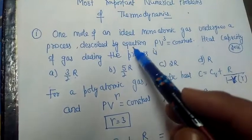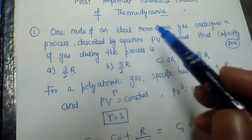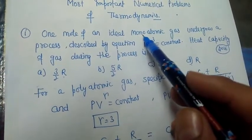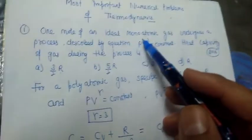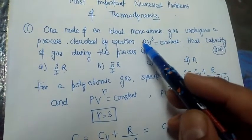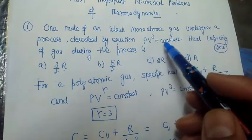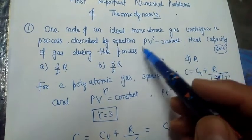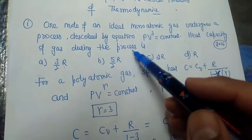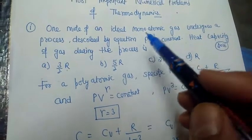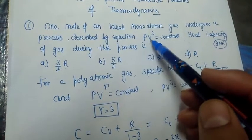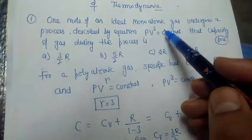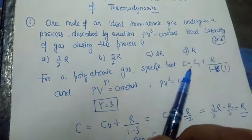The first problem is from thermodynamic processes, which is a very important topic. One mole of an ideal monoatomic gas undergoes a process described by the equation PV³ = constant. We have to calculate the heat capacity of the gas during this process.